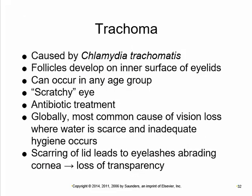Chlamydia trachomatis causes trachoma — follicles form on the inner surface of the eyelids, creating growths that give a scratchy-eye sensation. It's easily treated with antibiotics when found, but internationally it's the most common cause of vision loss, with inadequate hygiene being a major contributing factor. It can lead to loss of corneal transparency because every time you blink it scratches and abrades the cornea, eventually causing scarring.